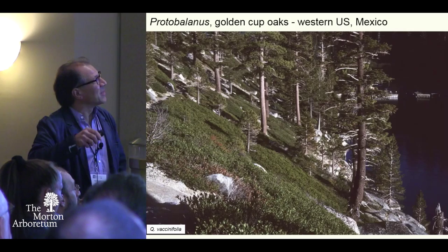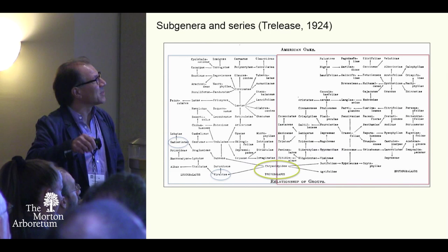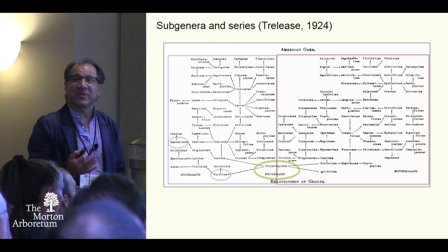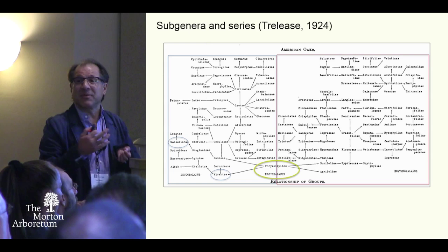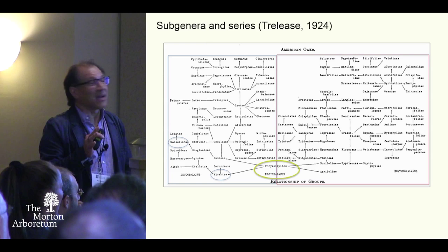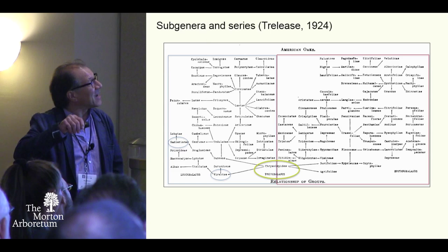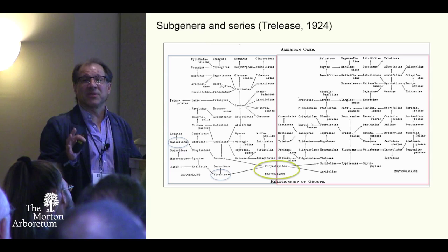This is Trelease's diagram — it looks pretty tough to puzzle out these oaks, but he tried. In these arrows of connections, on the right of his diagram are the red oaks. His classification was based on series: species alliances he thought were closely related, which he gave names to. On the left, the white oaks; down here, the golden cup oaks, called Protobalanus oaks. I've circled a couple of players that will figure into where we're going today: Sadleriana — Quercus sadleriana from western North America — and the Virentes, the coastal live oaks.